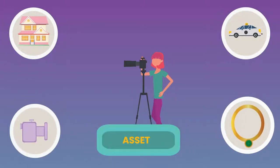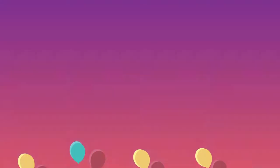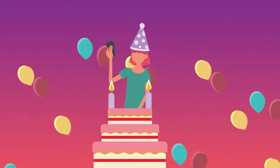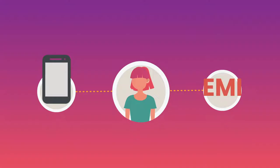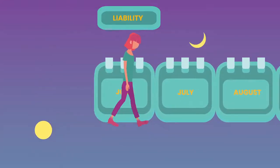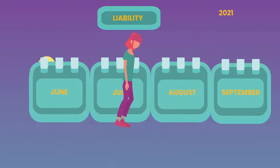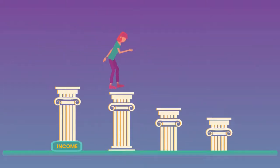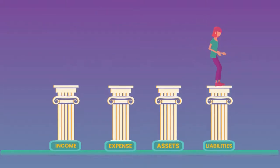Recently on her birthday, Alia bought the latest smartphone on EMI. This is her liability which she must repay regularly over the coming months. Together, income, expenses, assets, and liabilities are the four pillars of our financial life.